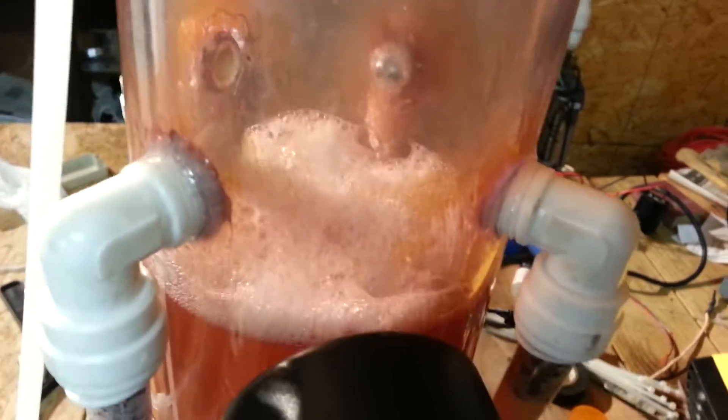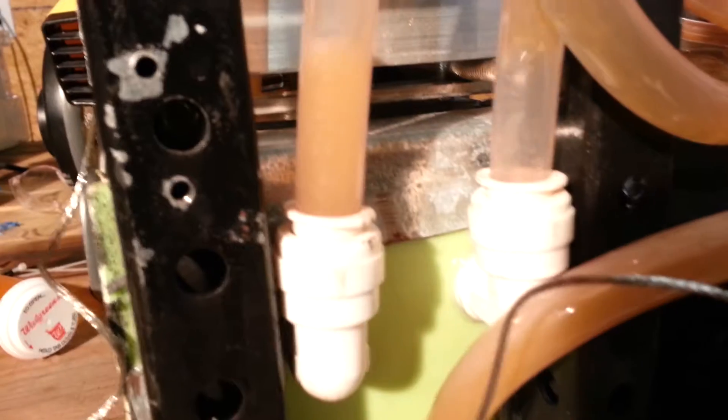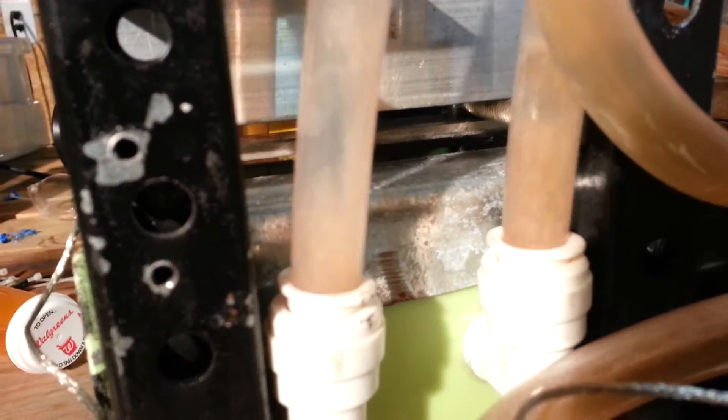Now there is some foam in there but it's nowhere near as bad a situation before. Before I had such a high flow rate that it was just a massive accumulation of foam and that would make the cell run at like a 10% duty cycle. I'm going to have to shut it off and let the foam die down.